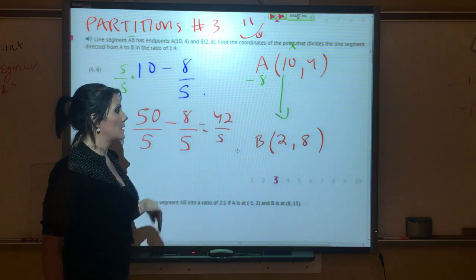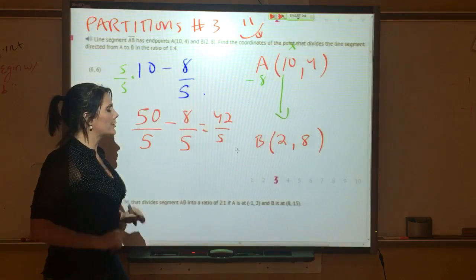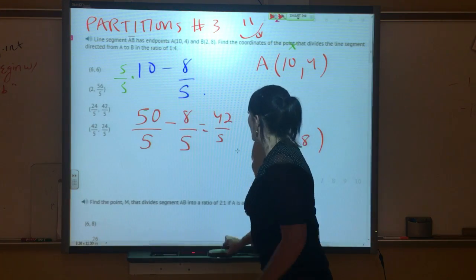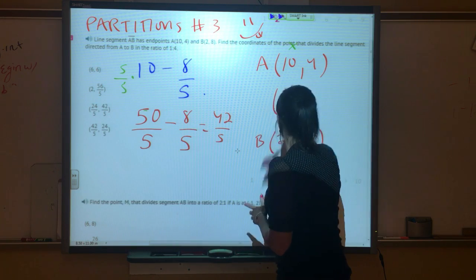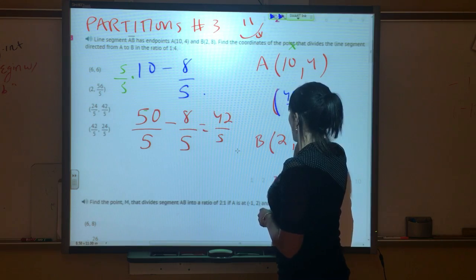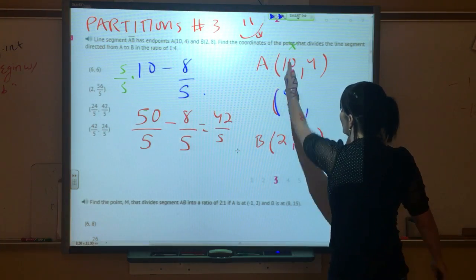50 minus 8 is 42, and the 5 stays the same. Guess what guys, leave it as a fraction. Fractions are your friends, do not make more work on yourself. So our new coordinate here, or the x value for the coordinate I should say, is going to be 42/5. We're halfway there. We've done our x's, now we're going to find our y.